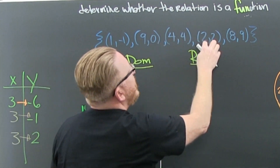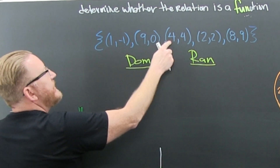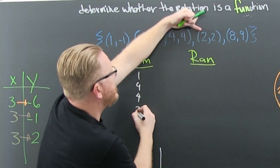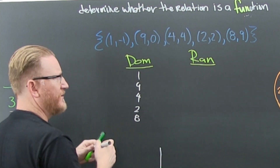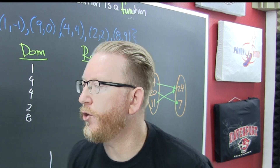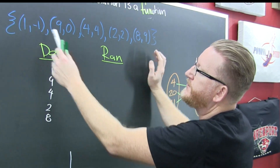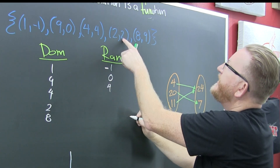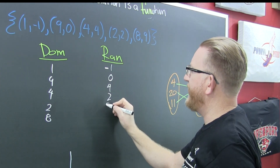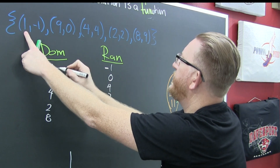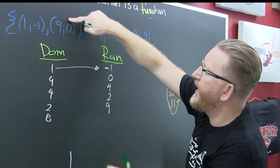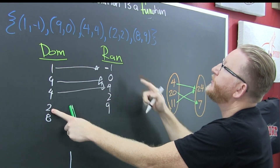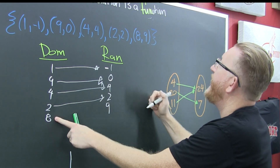So we should list the domain — the domain is the set of all X's. It looks like 1 is an X, and 9 is an X, and 4 is an X, and 2 is an X, and 8 is an X. Now I want to list the range. Looks like minus 1 is in there, 0 is in there, 4 is in there, 2 is in there, and 9 is in there. Now I'm going to make a map: 1 goes to minus 1, 9 goes to 0, 4 goes to 4, 2 goes to 2, and 8 goes to 9.